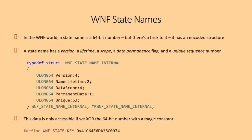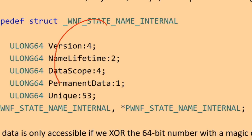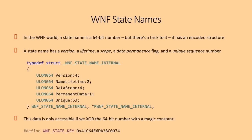In the WNF world, instead of events you have WNF state names, which are 64-bit IDs. These numbers actually encode a data structure — they're not just random numbers. They represent a version, a lifetime, a scope, a permanent flag, and a unique sequence number. The trick is: you take a WNF state name, XOR it with a magic key, and then you get this data structure out of it with these different bits that mean different things.